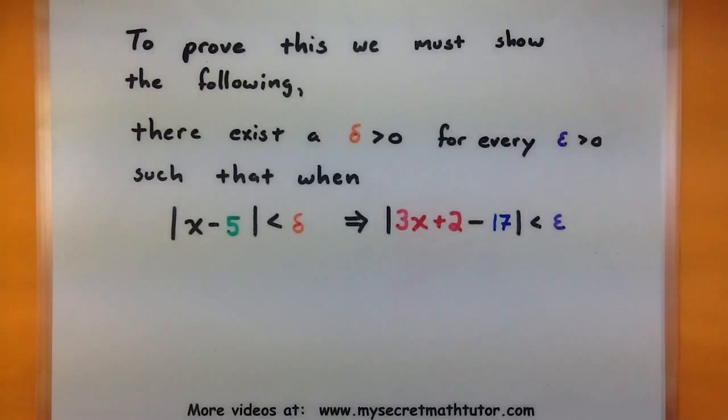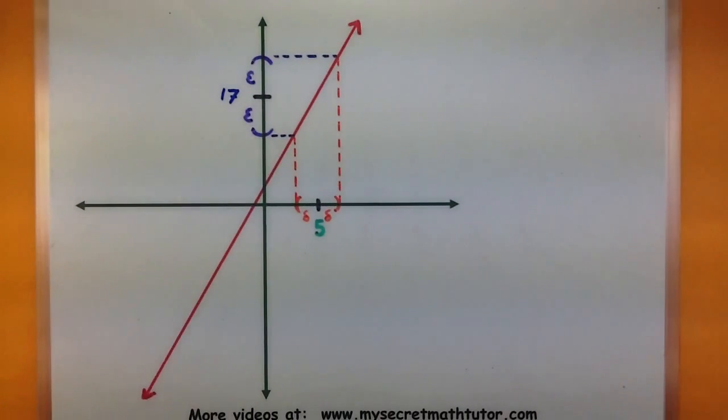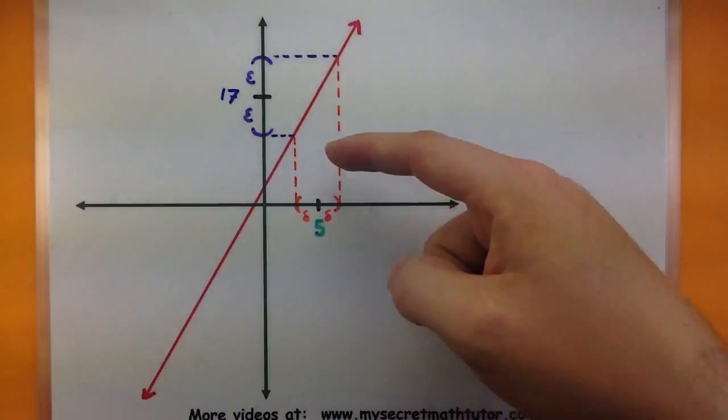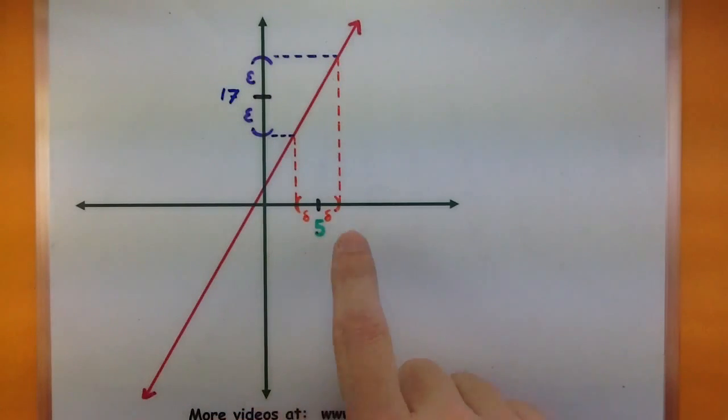such that when my x's are approaching 5, if they're within delta, that forces my function as it approaches 17 to be within epsilon. If you had to look at this more graphically, here's basically what we're trying to do. If someone were to come along and give us a threshold around 17, then I should be able to use some sort of threshold around 5 and know how close I need to be in order to get values that are around 17.